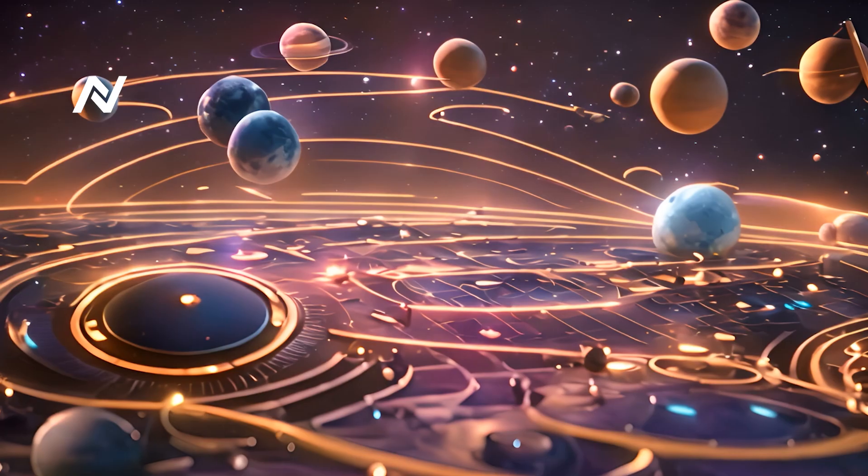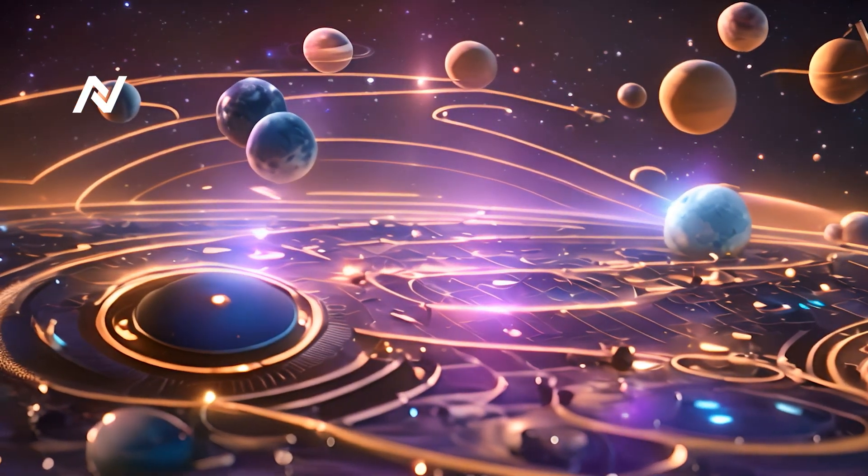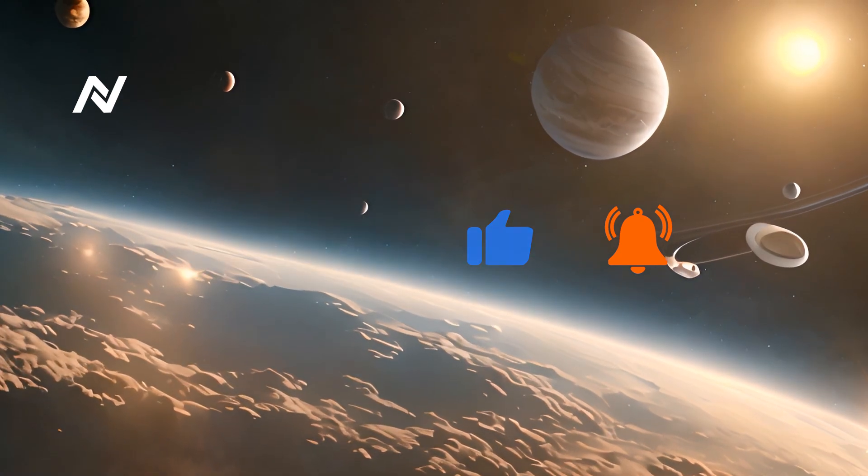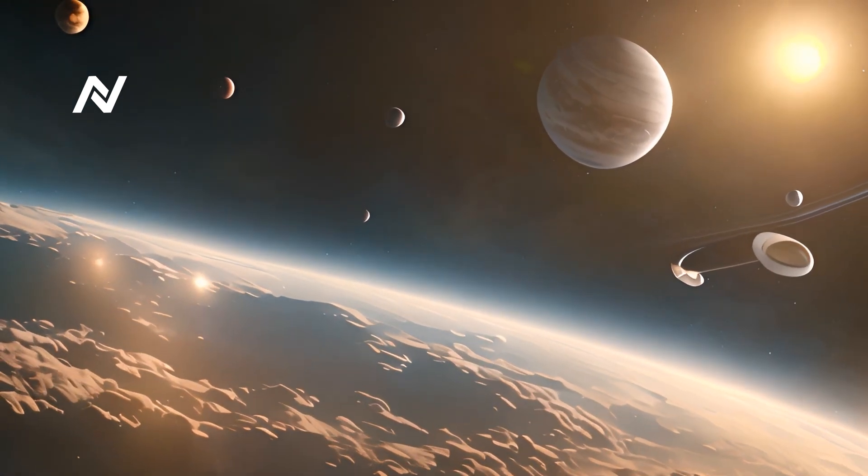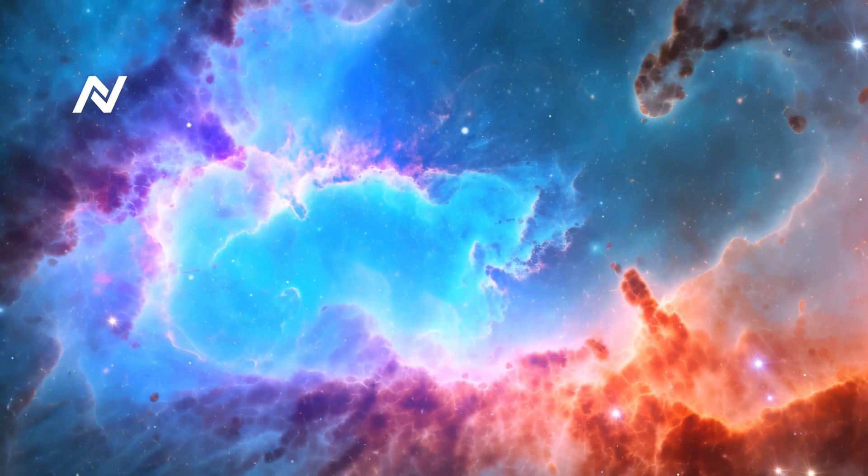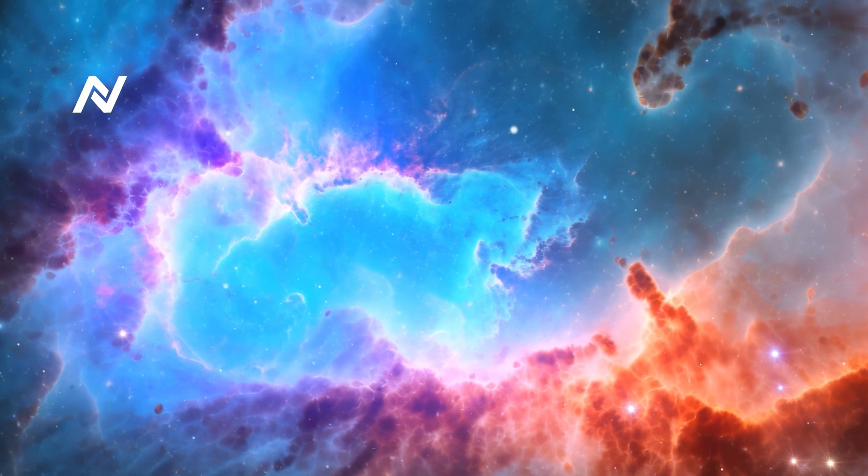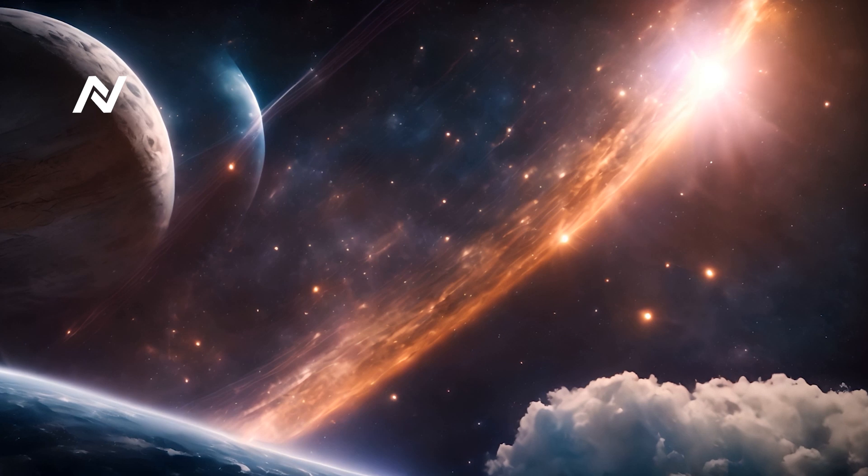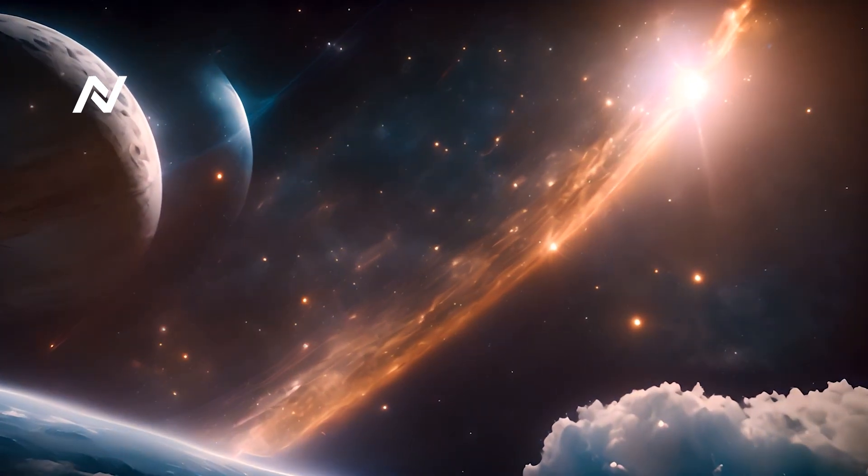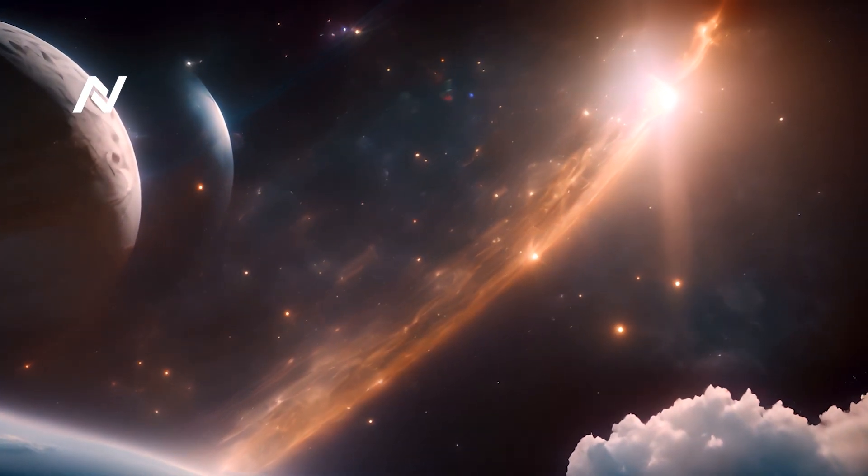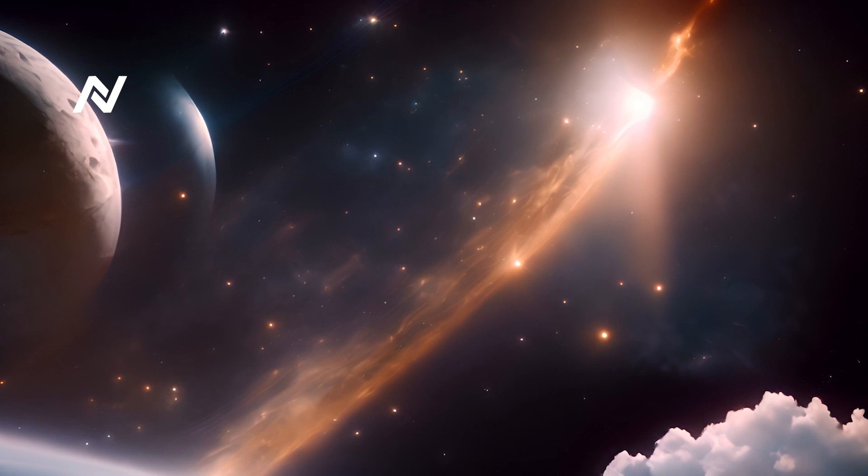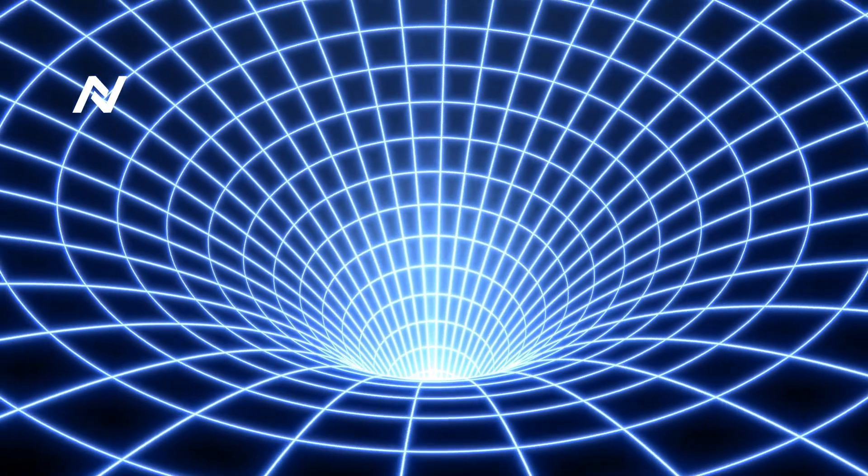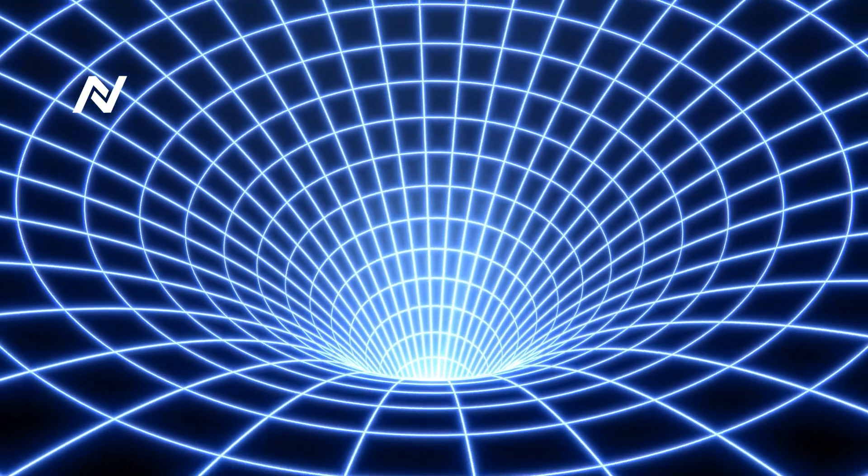Space-time, as it stands, is invisible to our eyes. It's a concept formulated from Einstein's theory of general relativity, a combination of space and time into a single continuum. Normally, we perceive space as three dimensions: height, width, and depth. Time is treated as a separate, mysterious dimension that we move through, always forward, never backward. But according to Einstein, these dimensions are woven together into a four-dimensional structure called space-time.